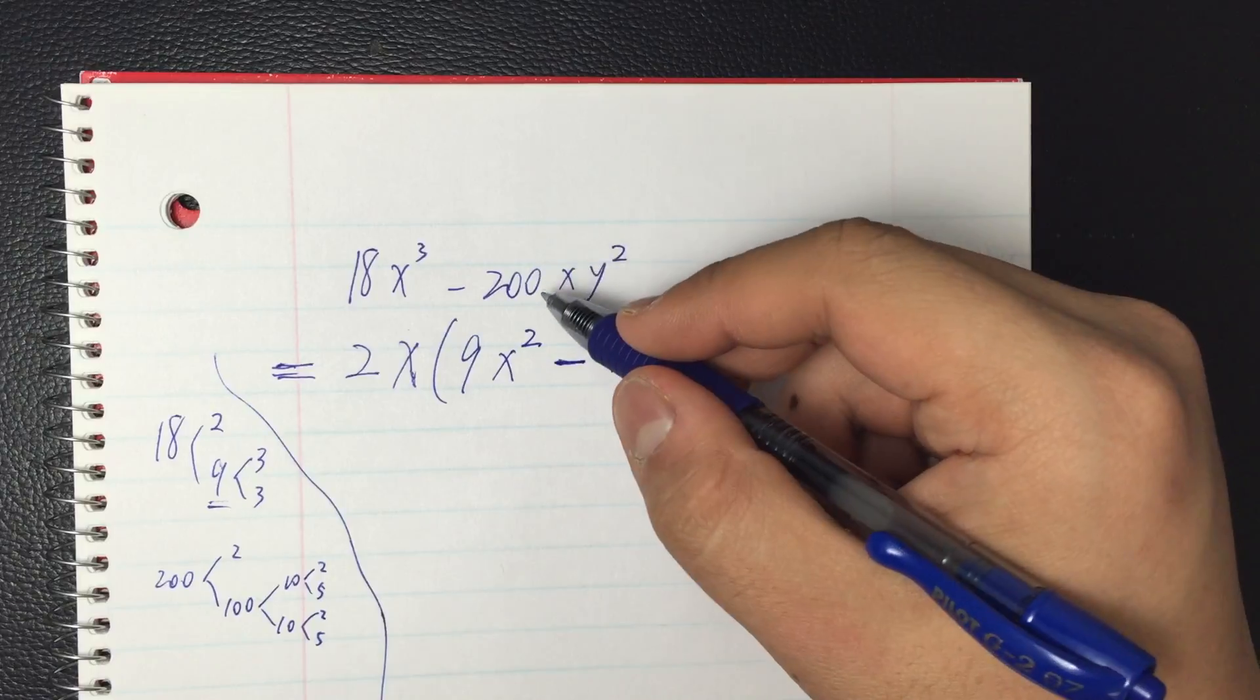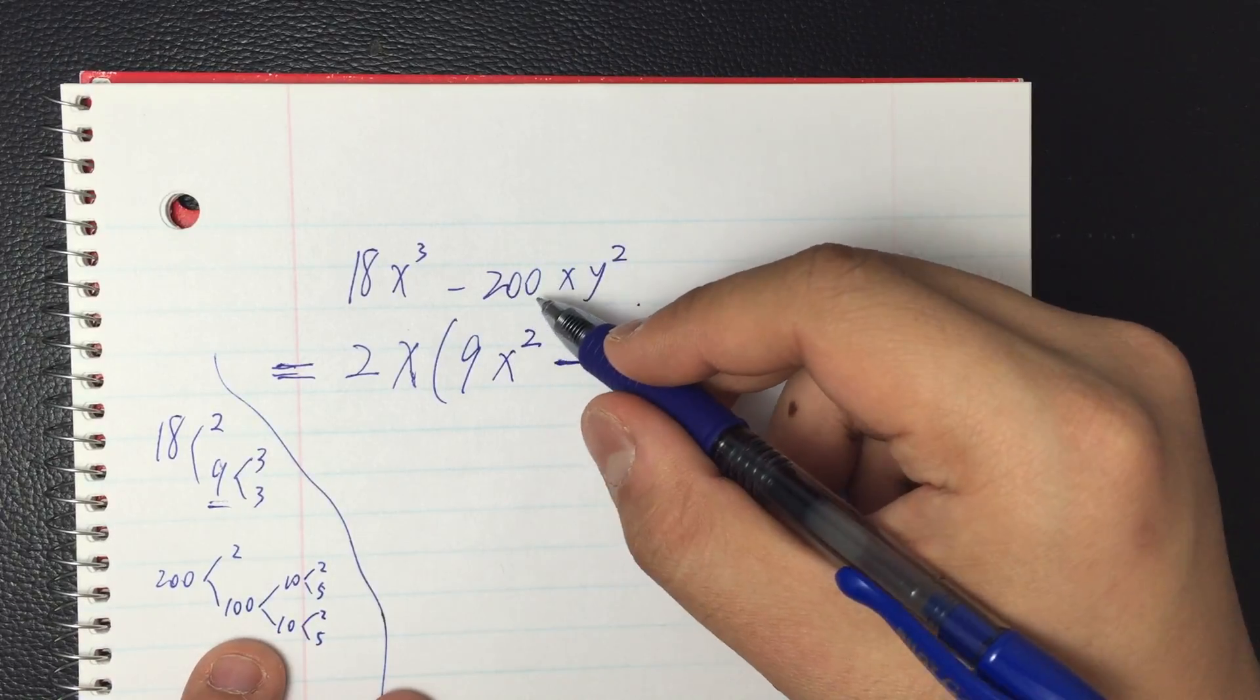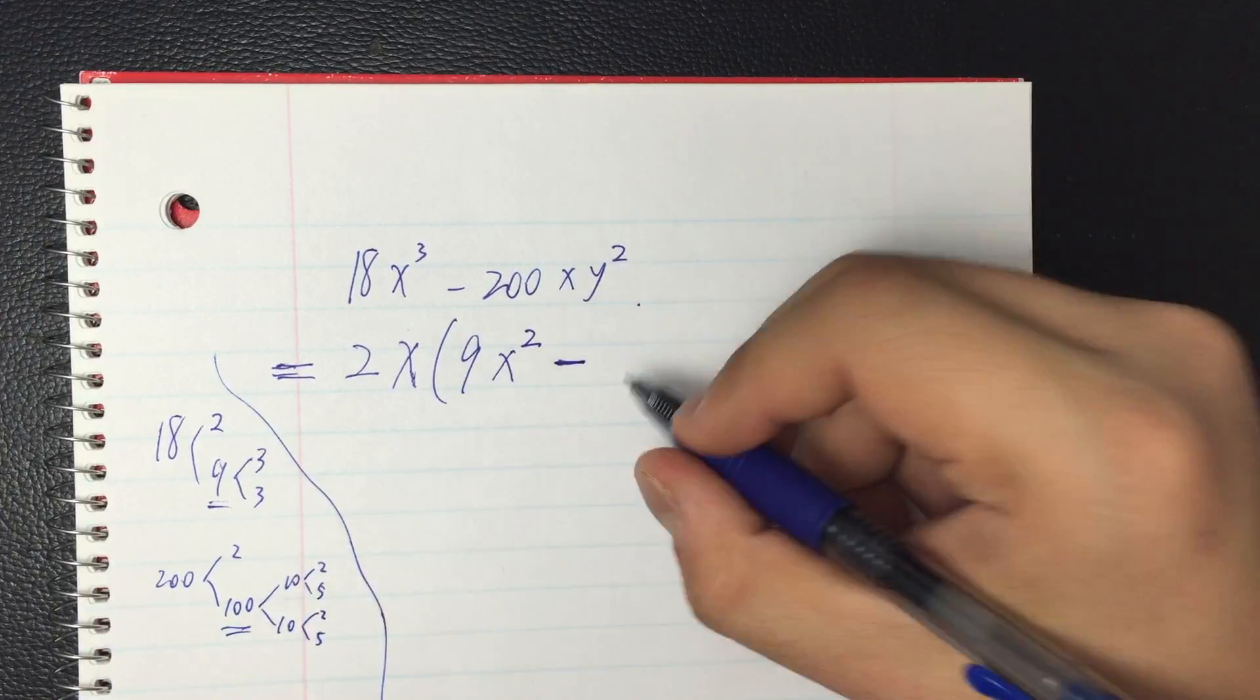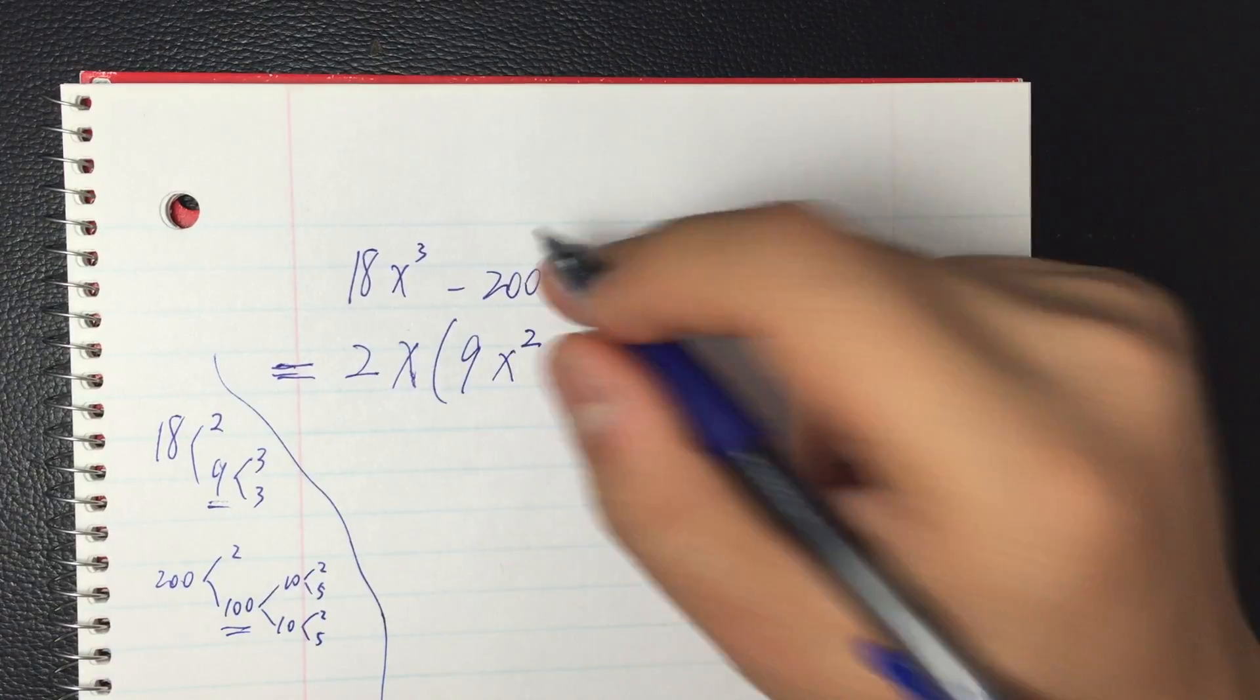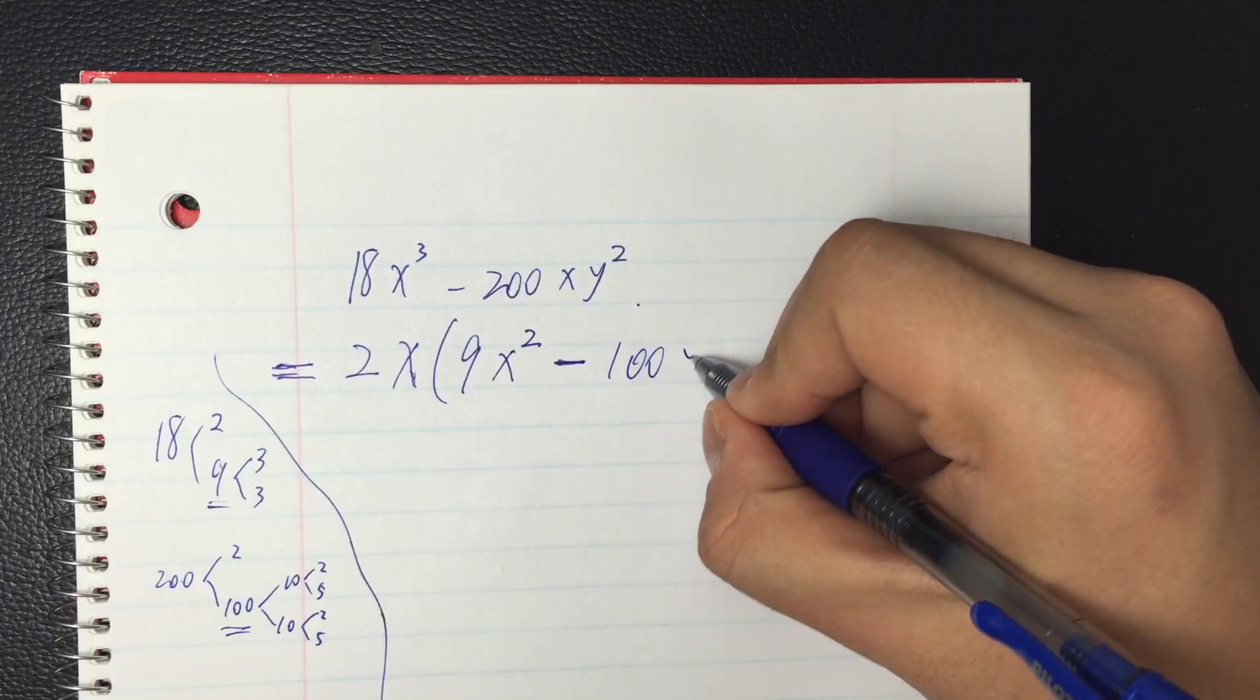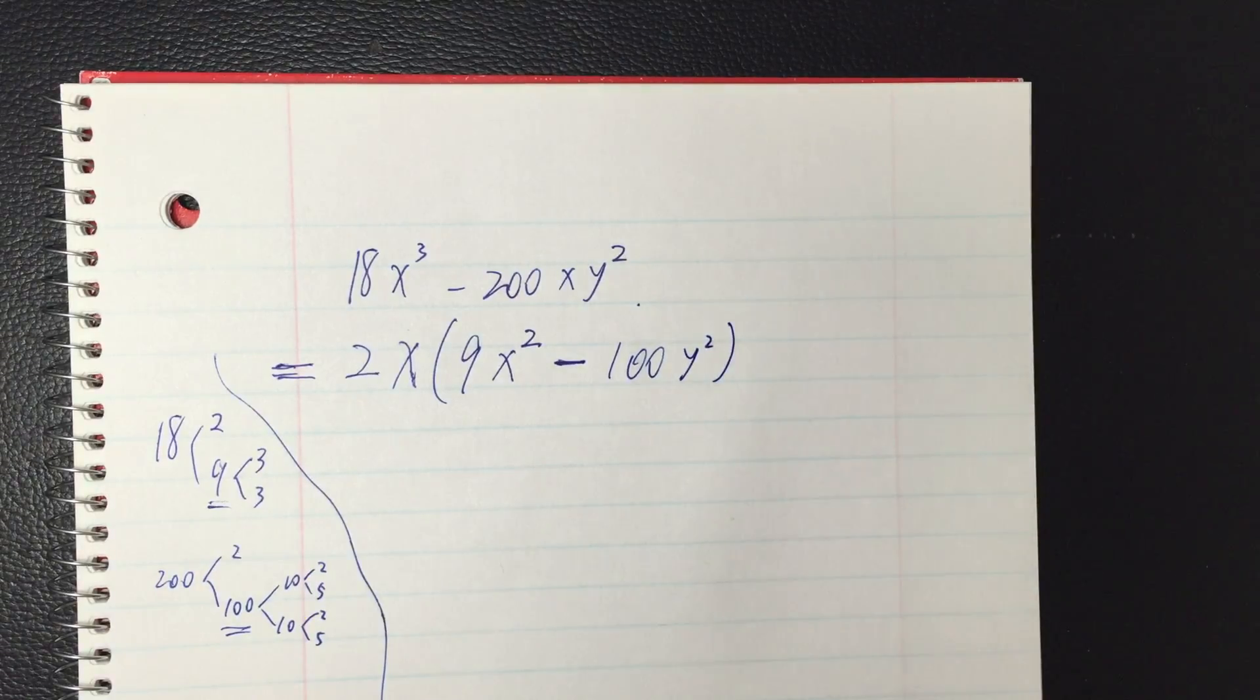Negative sign, we didn't touch that yet. For 200, take 2 out, I got 100. X already taken out, nothing left over. The y squared I didn't touch, put it down.